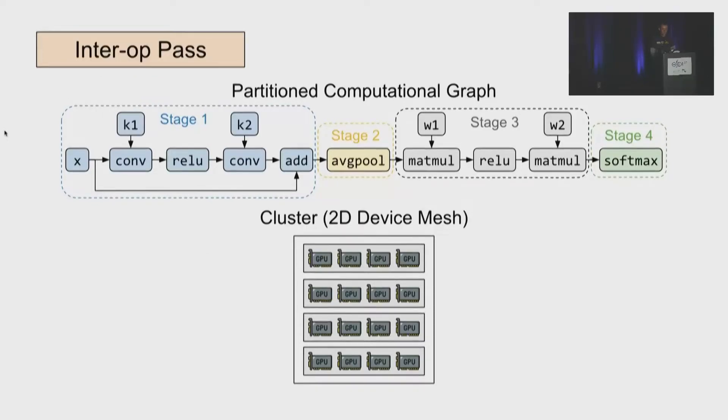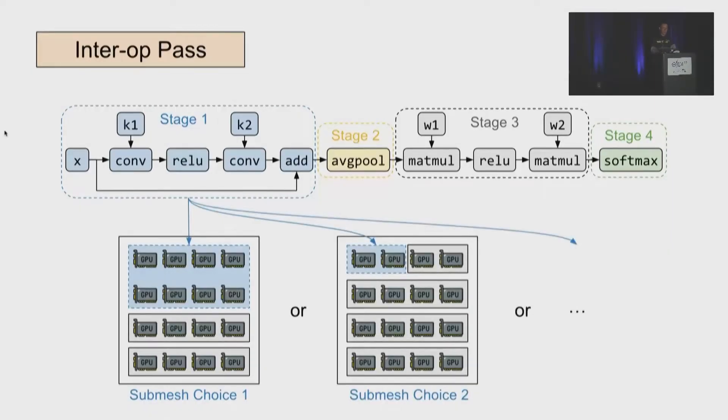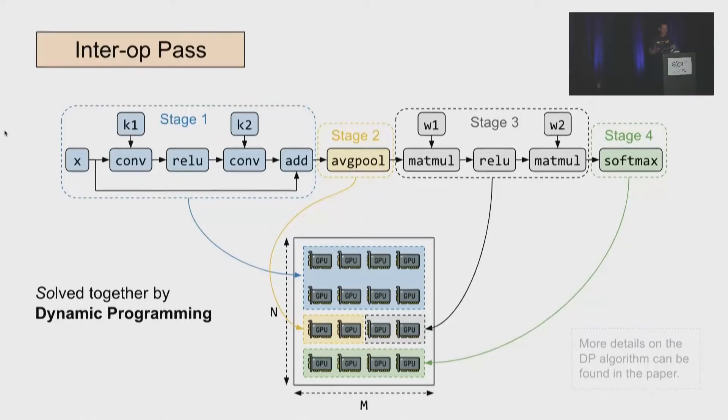So in Alpa, we extract all the devices as a 2D device mesh. We assume the devices along each dimension have the same communication property. For example, for a typical GPU cluster, we can set one dimension to be all the nodes. And all the communication along this dimension will go through slower cross-node Ethernet. And we set another dimension to be all the GPUs within a node. And here the communication will go through the faster connections like NVLink. So then we assign devices to each stage by picking the best submesh choice within the device cluster. So in Alpa, we find that the problem of how to partition the graph and how to assign each partition stage a set of devices from the device mesh can be nicely formulated as a dynamic programming problem to minimize the total pipeline execution latency. More details about the algorithm can be found in our paper.